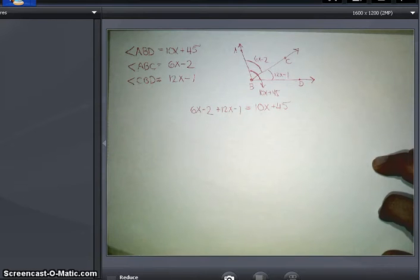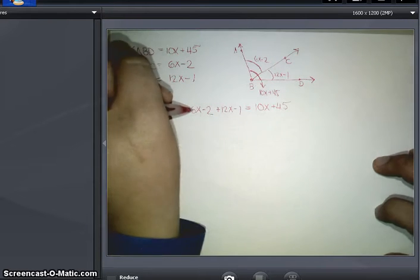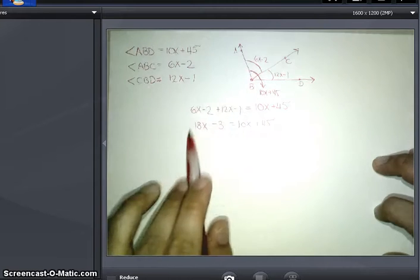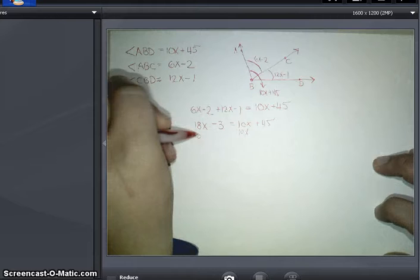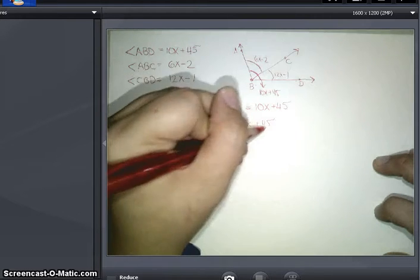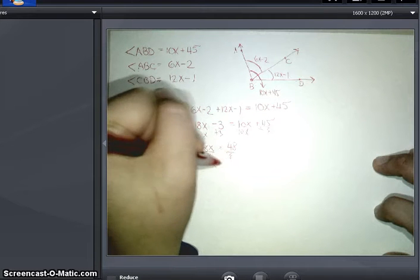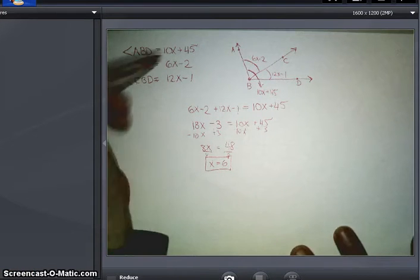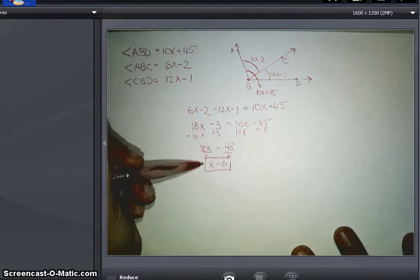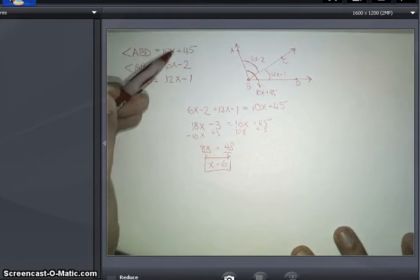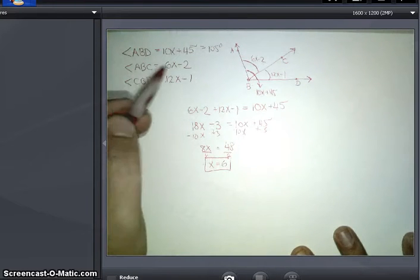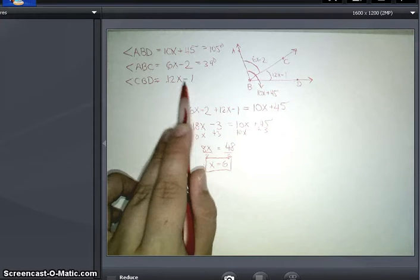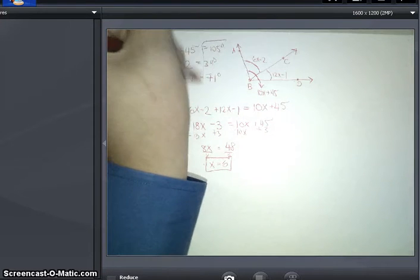From here, this is now just a mathematical expression, an equation that we can solve by combining like terms, isolating the variable. 6x and 12x will give me 18x. Negative 2 and negative 1 is negative 3. Subtract the 10x to the other side of the equation. That would give me 8x. I will also add the 3 over here as well. That gives me 8x equals 48. Divide both sides by 8. My x value here is going to be 6. This question is asking me, not to give the value of x, but to give the value of ABD, ABC, and CBD. So what I will do is take my 6 and plug it into each of these expressions. 10 times 6 is 60. 60 plus 45 is 105 degrees. 6 times 6 is 36, and 36 minus 2 is 34 degrees. And finally, 6 times 12 is 72, and 72 minus 1 is 71 degrees. And there's my final solution.